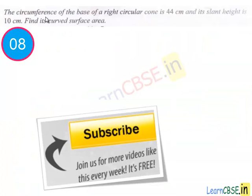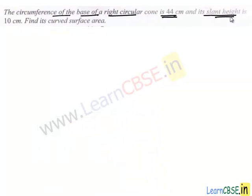Let's move to the next question. Here circumference of the base of a right circular cone is 44 cm and its slant height is 10 cm. We have to find the curved surface area of this cone.